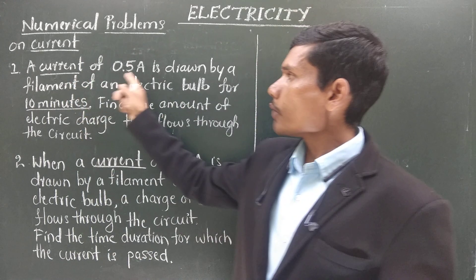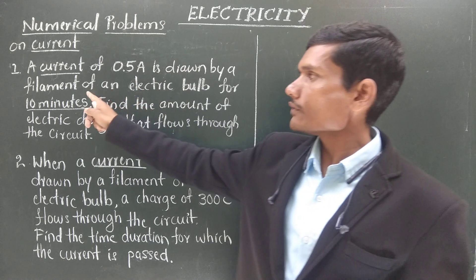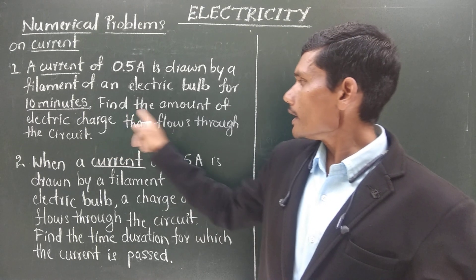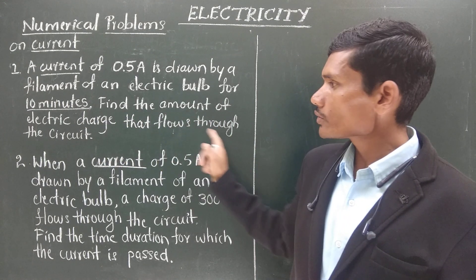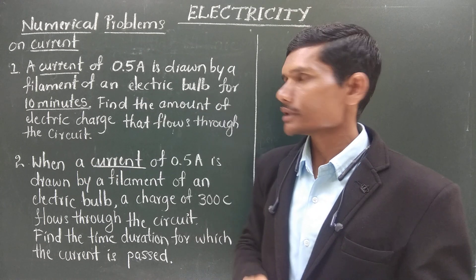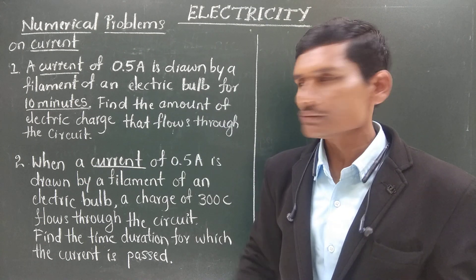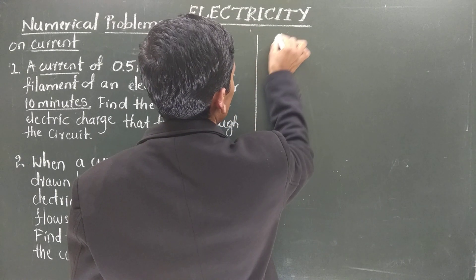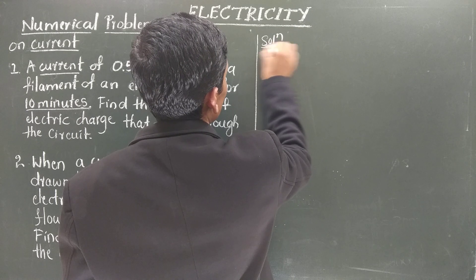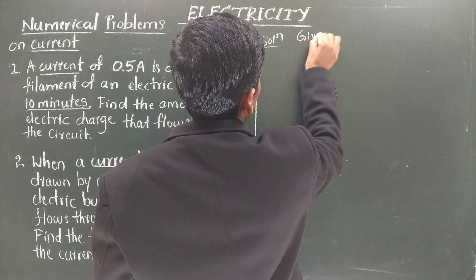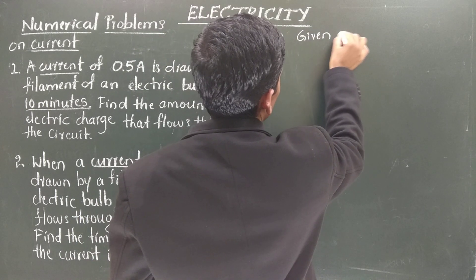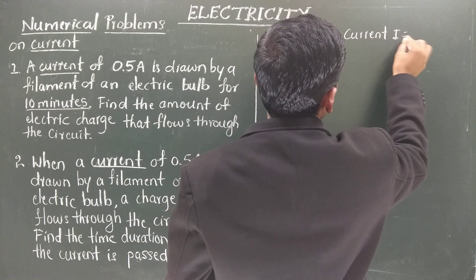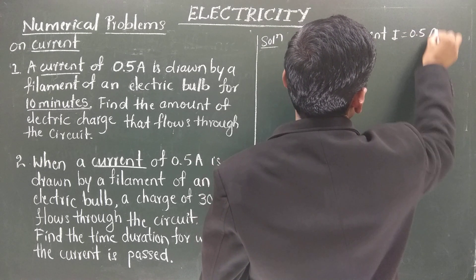Let us take the first example: 'A current of 0.5 ampere is drawn by a filament of an electric bulb for 10 minutes. Find the amount of electric charge that flows through the circuit.' When you read this, you first write down what is given. Current i = 0.5 ampere is given.